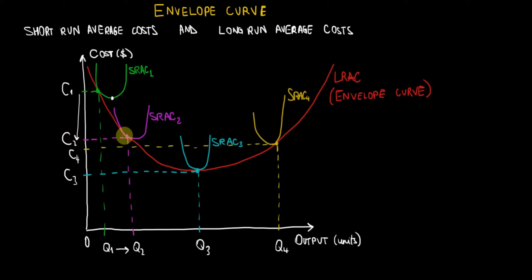The firm increases output and achieves a lower average cost per unit, going from C1 to C2. This is going to be the new average cost of production because it adjusted its production facilities. The fixed factors of production have been increased such that the production process becomes more efficient and they achieve a lower average cost per unit.